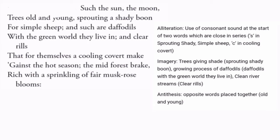The sun, the moon, trees old and young, sprouting a shady boon for simple sheep, and such are daffodils with the green world they live in, and clear rills that for themselves a cooling covert make against the hot season, the mid-forest brake rich with a sprinkling of fair musk rose blooms. In this stanza the poet has used alliteration — the 's' sound is repeated in 'sprouting' and 'shady', and in 'simple' and 'sheep', and the 'k' sound in 'cooling' and 'covert'.